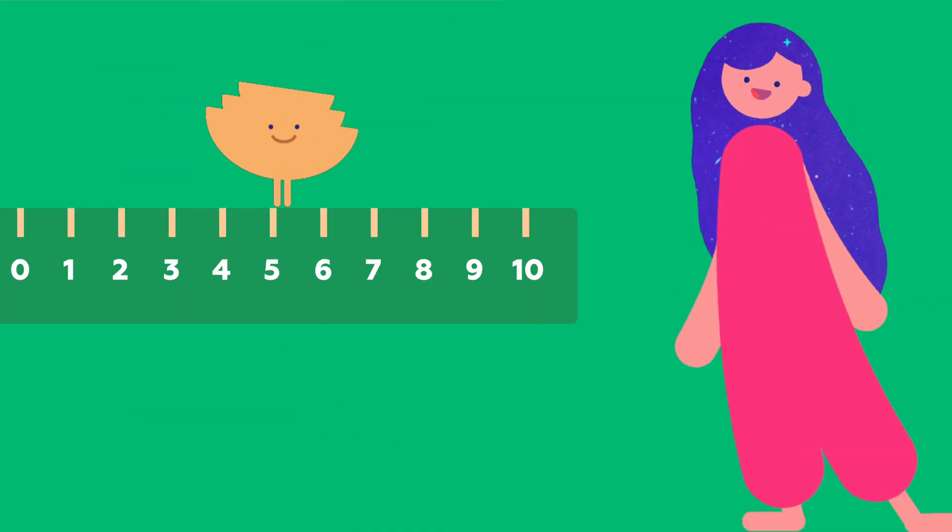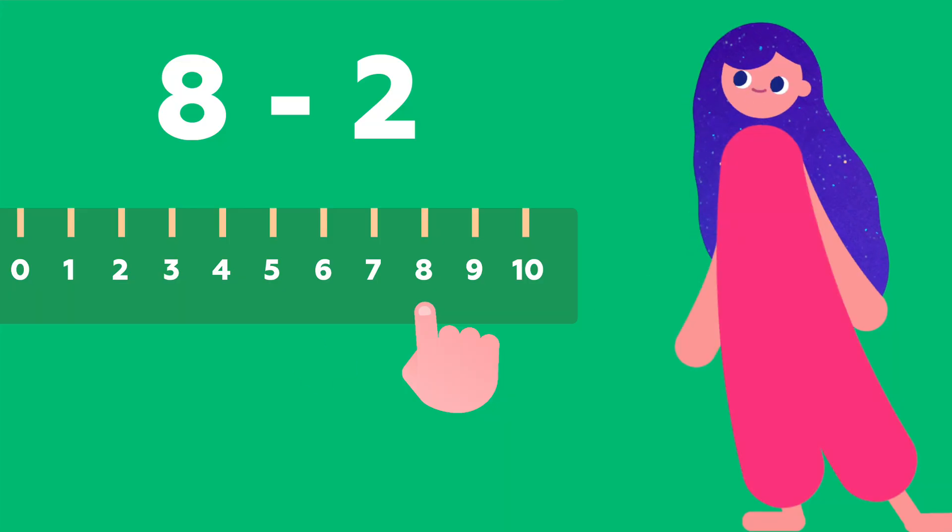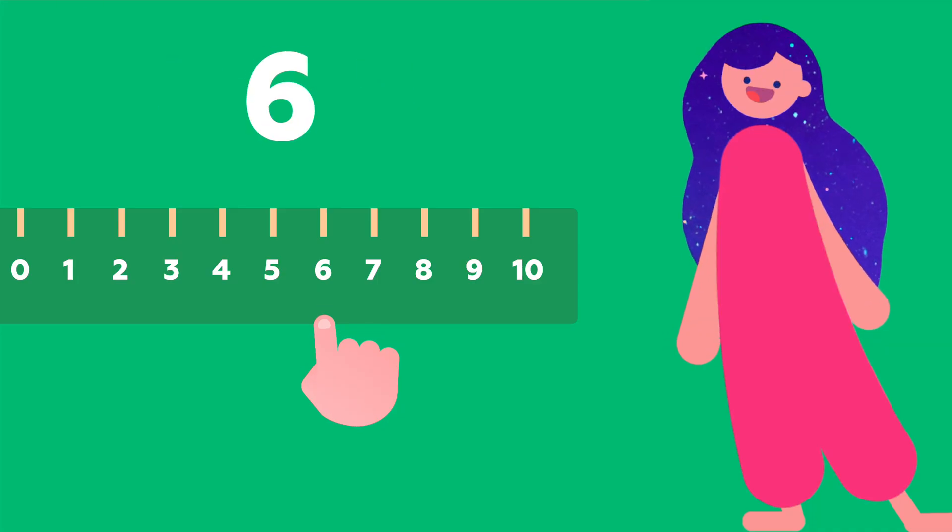But I can also subtract using the ruler. Let's take away 2. For that, I need to take 2 steps to the left. 1, 2. And now I'm at 6. Ta-da!